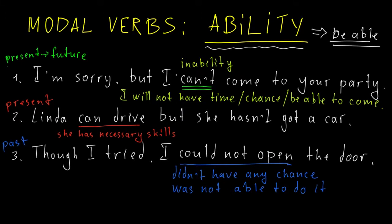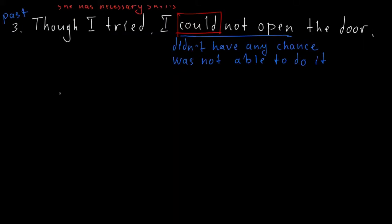And in all these three cases, I used modal verb can, here, here, and even here. Can or its forms. Negative form or past form. And that's very important to remember, that can or its form could equals ability or inability to do something.